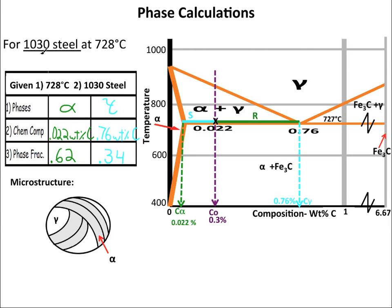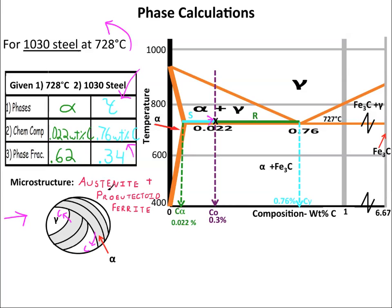Our next example is for the same 1030 hypo-eutectoid steel, but this time at one degree above the eutectoid temperature. Here are the calculations from the last video. As we cool further into the alpha plus gamma region, the alpha continues growing predominantly from the grain boundaries, and continues kicking out more and more carbon, enriching the gamma, and making the gamma's weight percent carbon increase to the eutectoid composition, as seen right here. We still call this microstructure austenite plus pro-eutectoid ferrite.